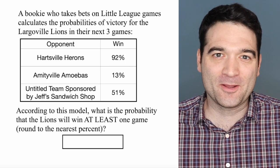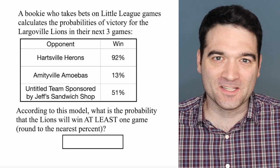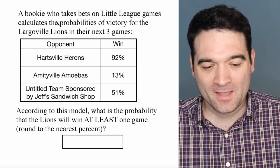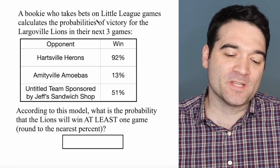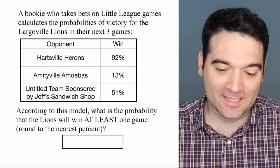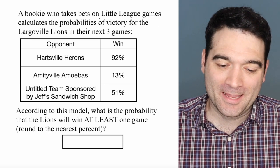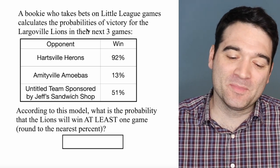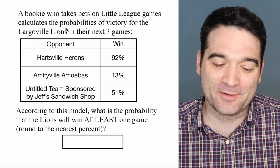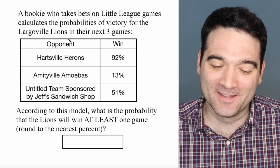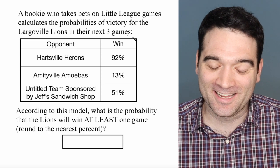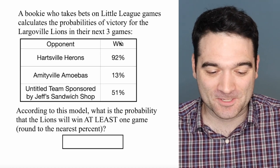Here's a GRE probability question. Let's take a look. A bookie who takes bets on Little League games calculates the probabilities of victory for the Largoville Lions in their next three games.